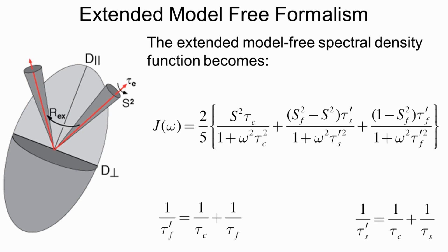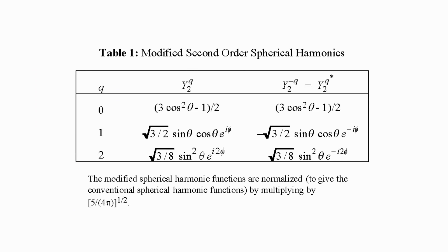So now we have models for the spectral density function and the BWR equations give us a recipe for calculating relaxation rate constants. For any coherence or pair of coherences, you can plug them into the BWR equations with any relaxation mechanism and calculate the relaxation rate constant or cross-relaxation rate constant between any pair of operators for any Hamiltonian, as long as you know the basis functions. Generations of graduate students have done this, and the literature is full of tables of rate constants expressed in terms of spectral density functions — so fortunately you can usually look them up.